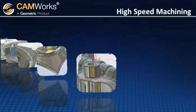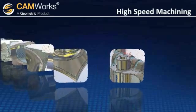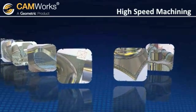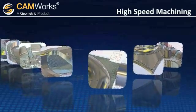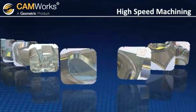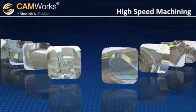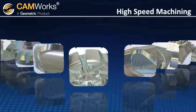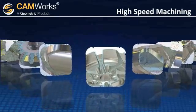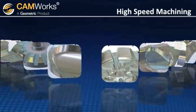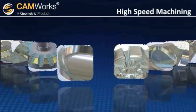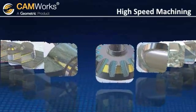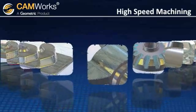Machining times are reduced by tracking previously removed material, which reduces air cutting. At the same time, increased feed rates are possible through light cuts and smooth and continuous toolpath motion. Improved surface finish is achieved through the use of smaller cutters and a more constant chip load.